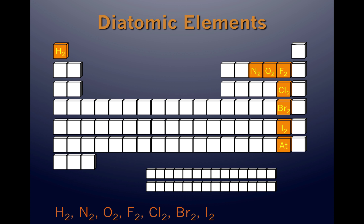Hydrogen, nitrogen, oxygen, fluorine, and chlorine are all gases, while bromine is a liquid and iodine is a solid.